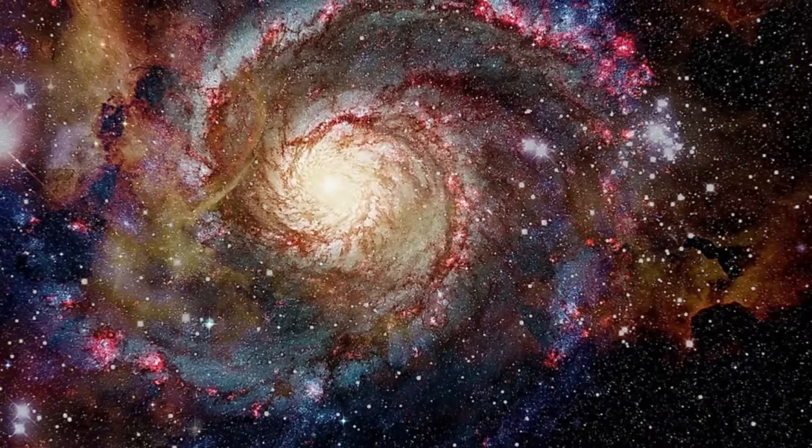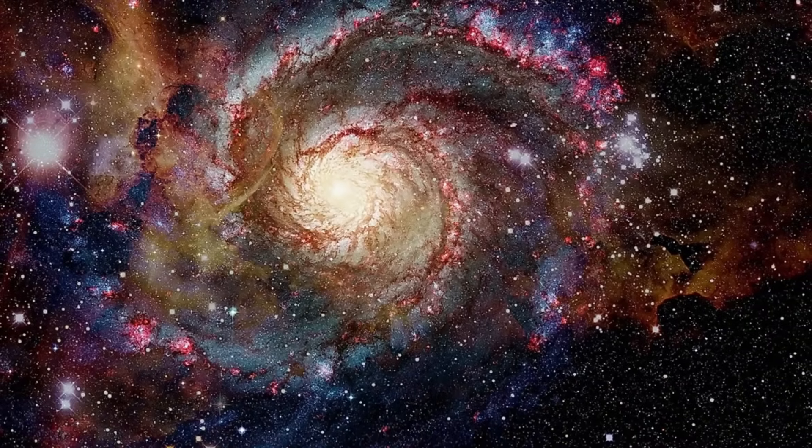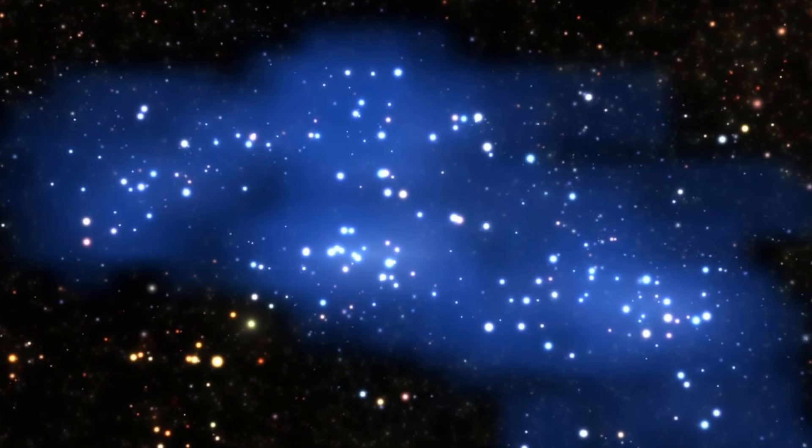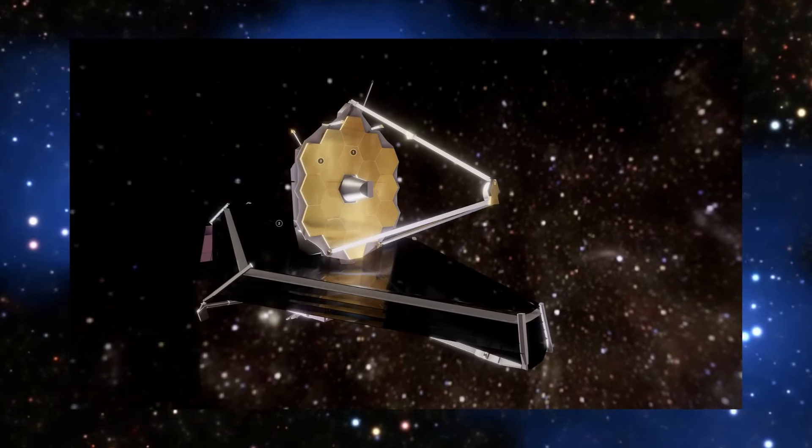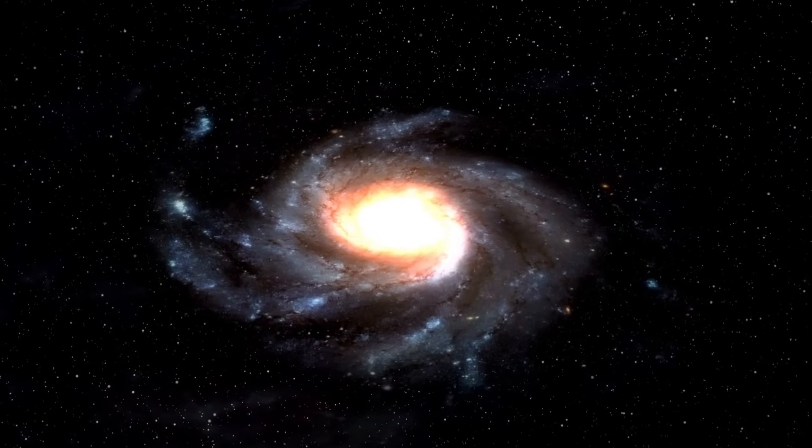Accepted theories suggest that within one to two billion years into the universe's existence, these early proto-galaxies matured into dwarf galaxies that began consuming each other to grow into larger galaxies like our Milky Way. The James Webb Space Telescope allows us to peer approximately 13.4 billion years into the past.